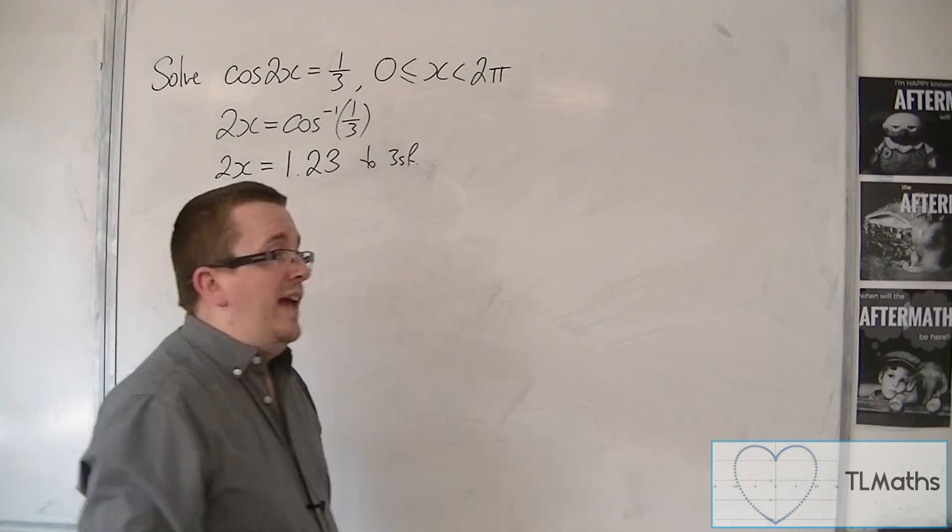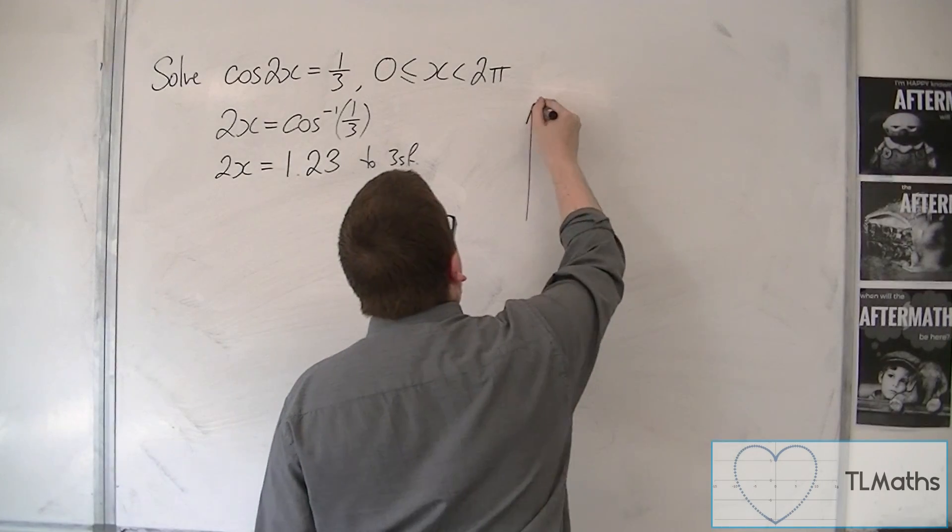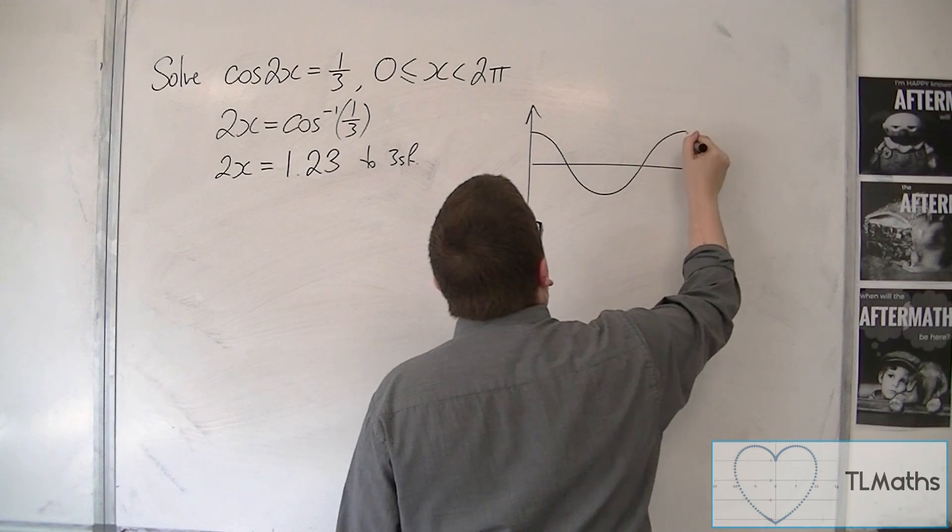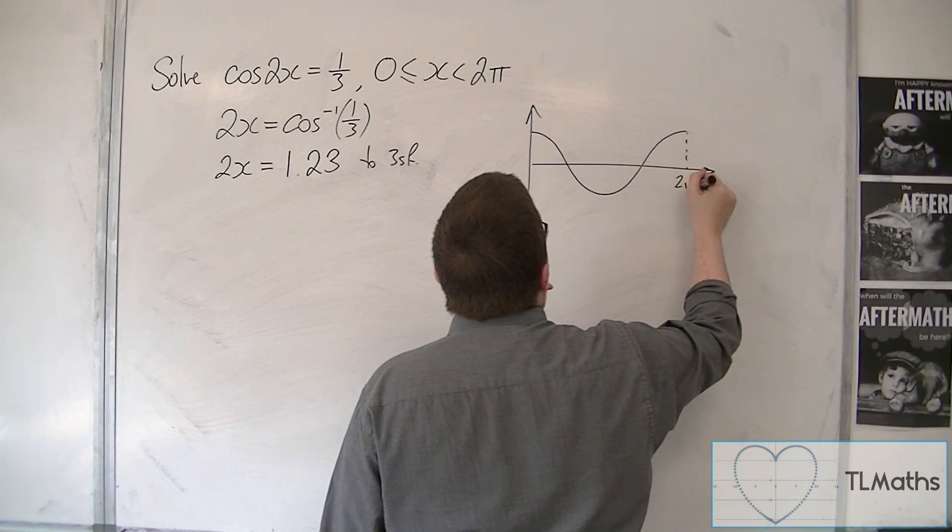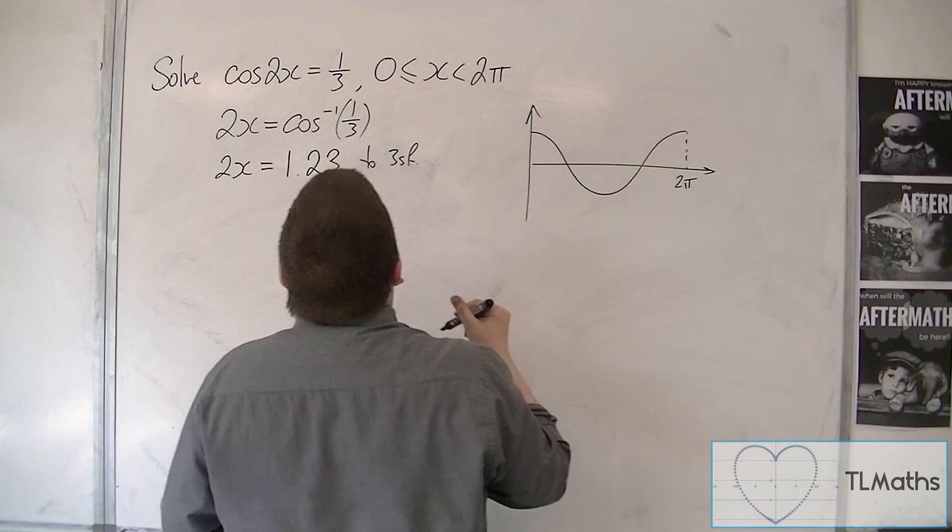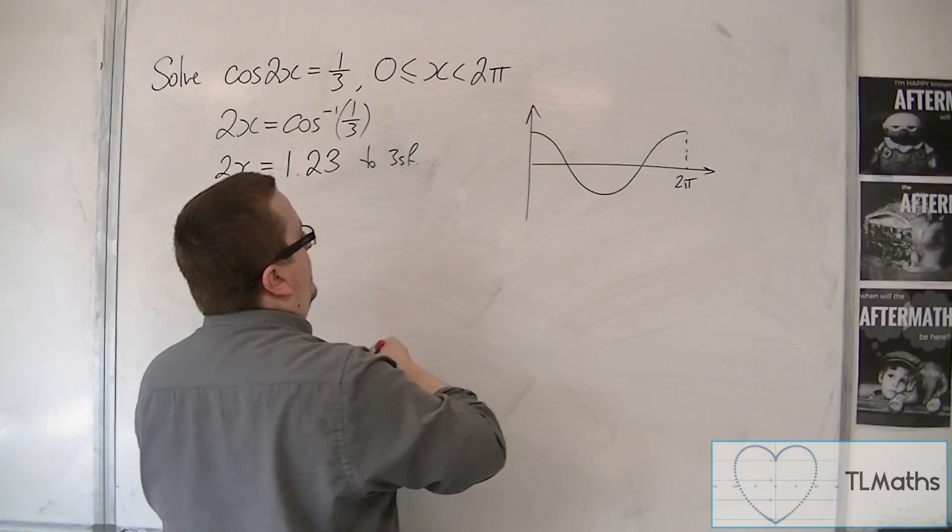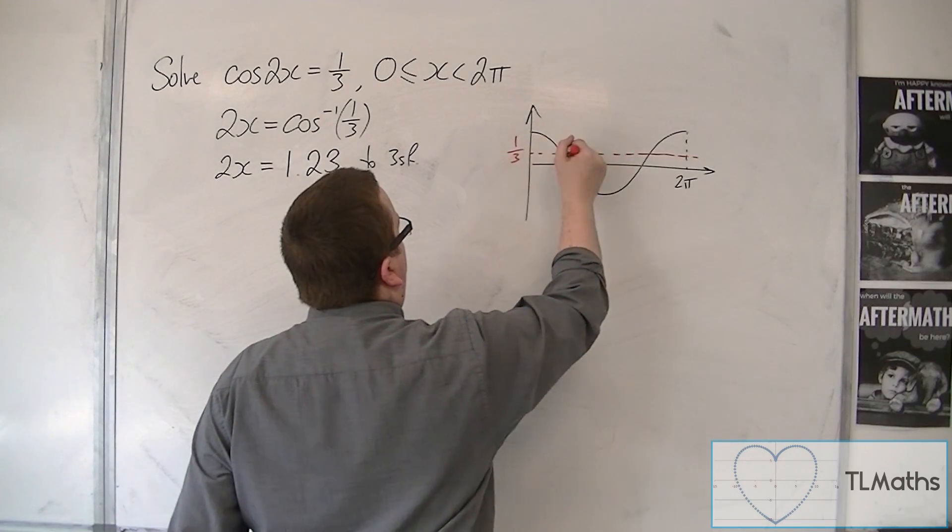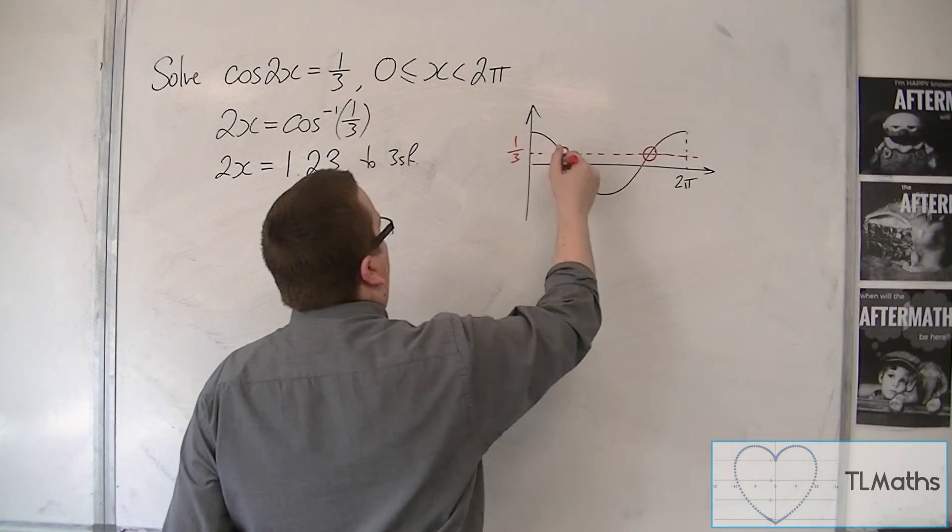So then we sketch cosine to make sure I've got all the solutions. So there is cosine between 0 and 2 pi. So if I put on this line of 1 third, horizontal line, 1 third, there's my first solution, there's my second.